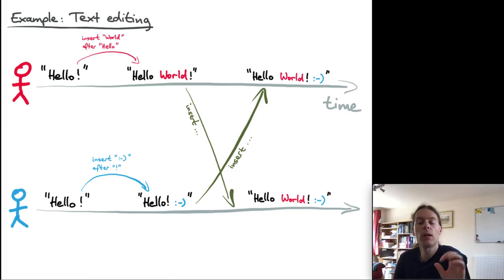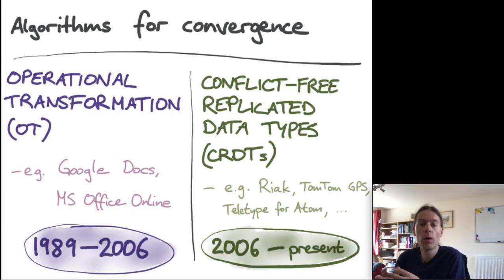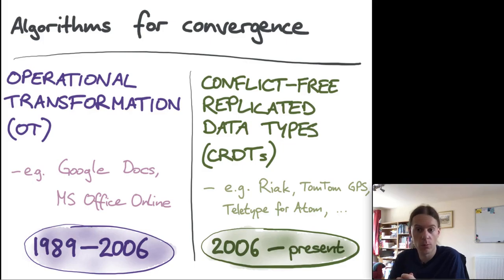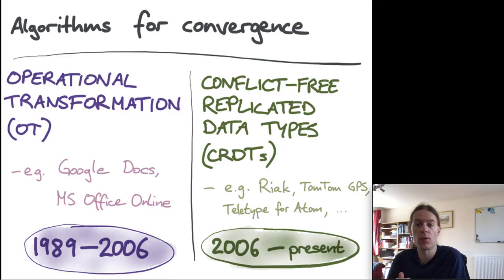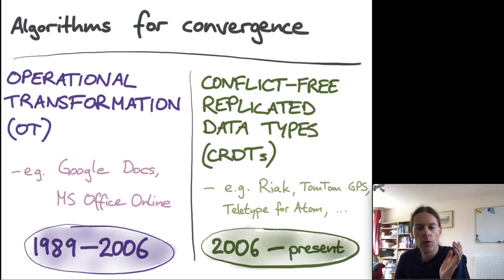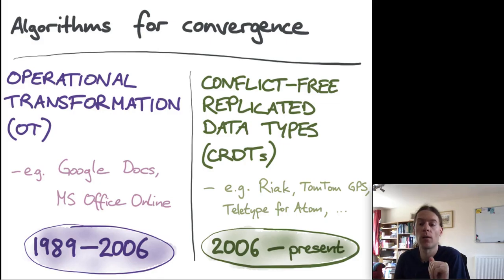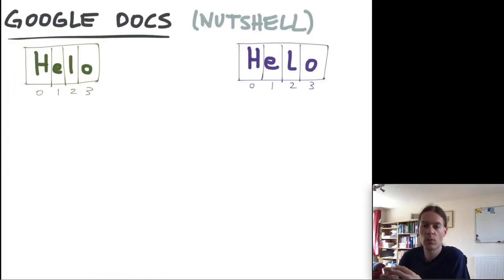There are broadly two families of algorithms for achieving collaborative text editing. One is operational transformation, or OT — the classic approach that has been around for a long time and is used by Google Docs. Then there's a newer family called CRDTs, which I work on, that takes a different approach to solving a similar problem. I'll start with a brief summary of how operational transformation works, as a comparison point for CRDTs.